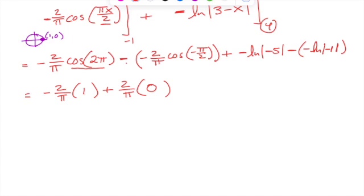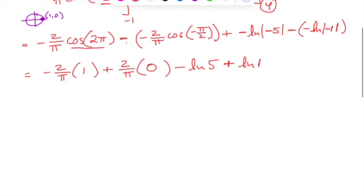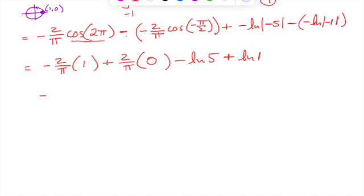and then plus negative, so minus ln of the absolute value of negative 5, so that's just ln of 5, and then minus negative, so plus ln of the absolute value of negative 1, or ln of 1. And now we're really getting down to it, we can simplify a few things. Negative 2 over pi times 1, that's obviously negative 2 over pi. 2 over pi times 0, that's 0, so that's gone. Minus ln of 5, that's not something I can simplify without a calculator.